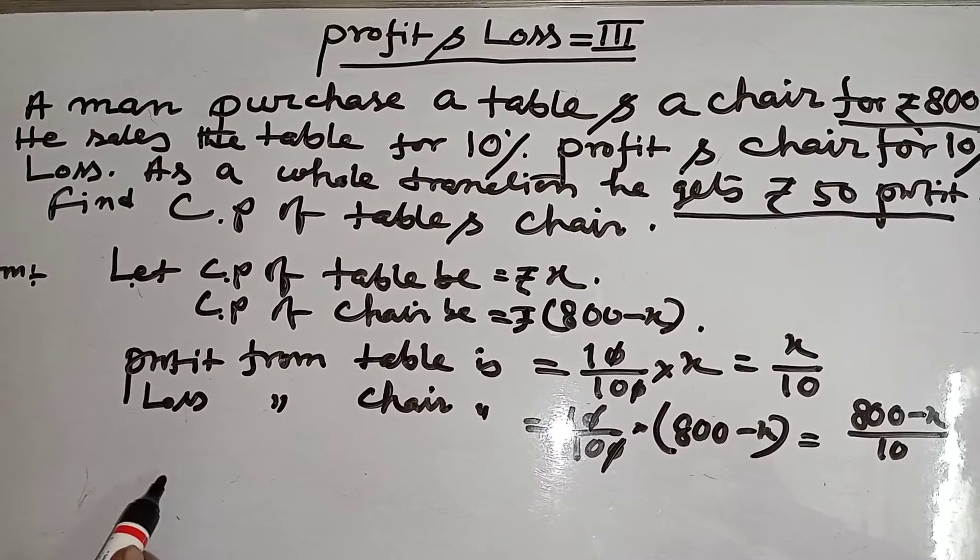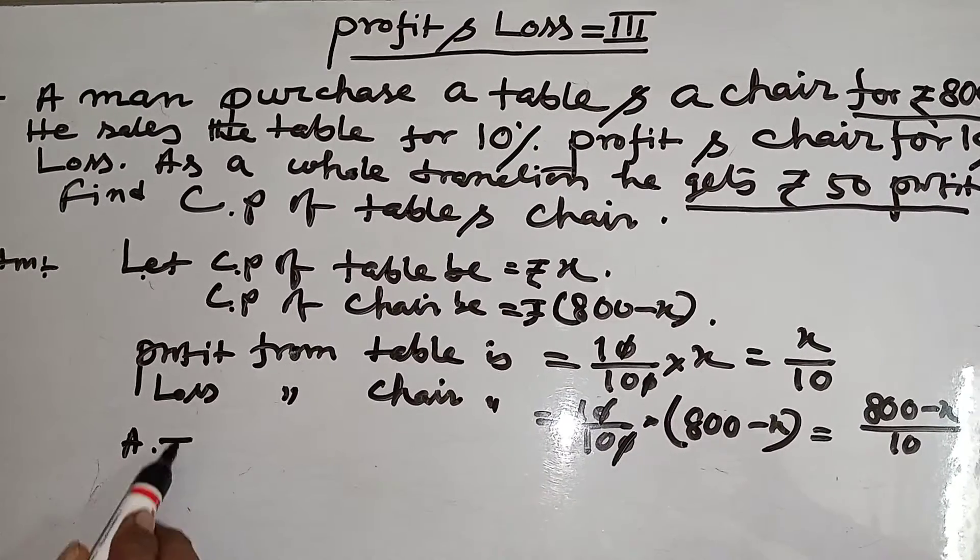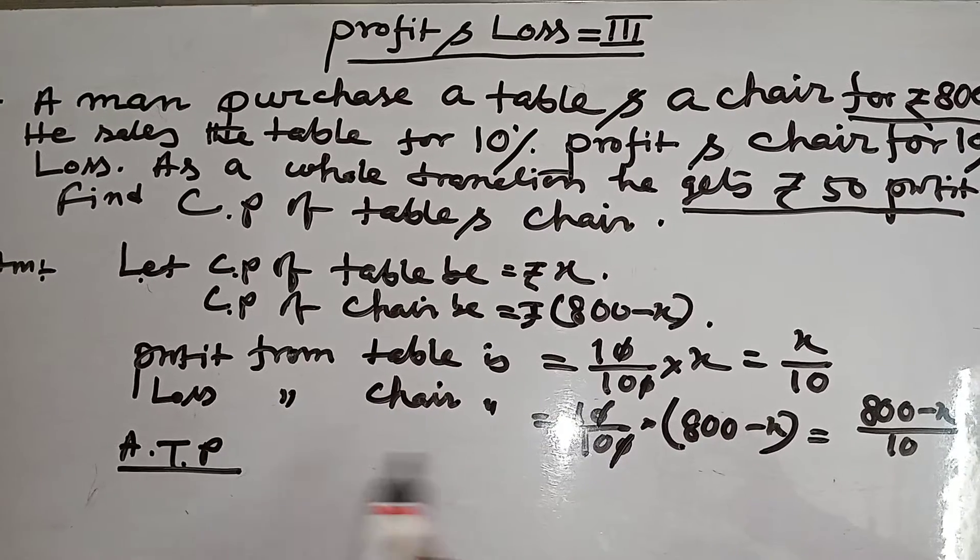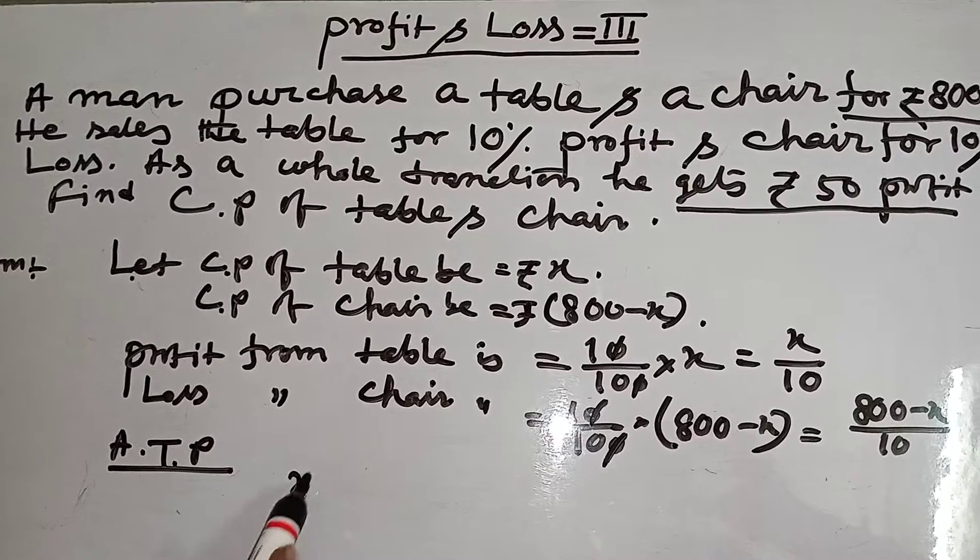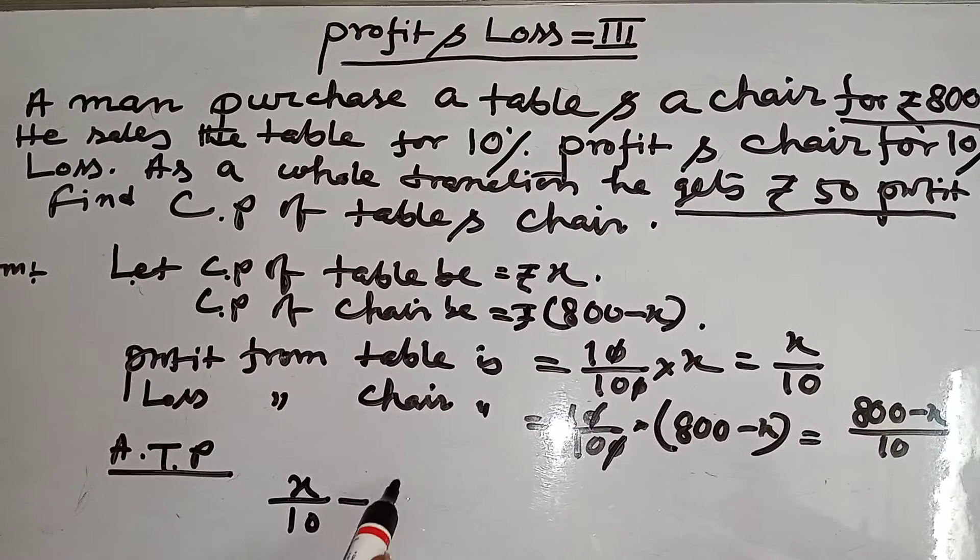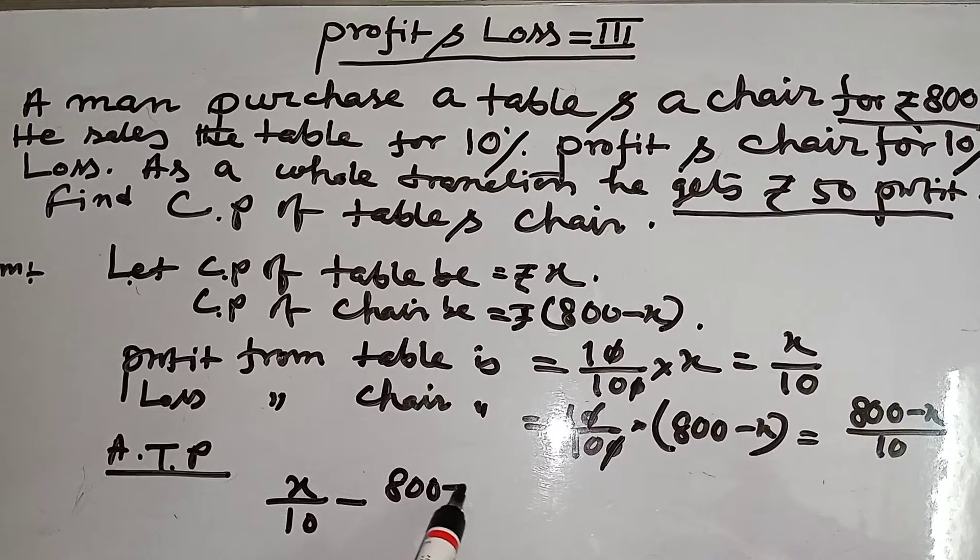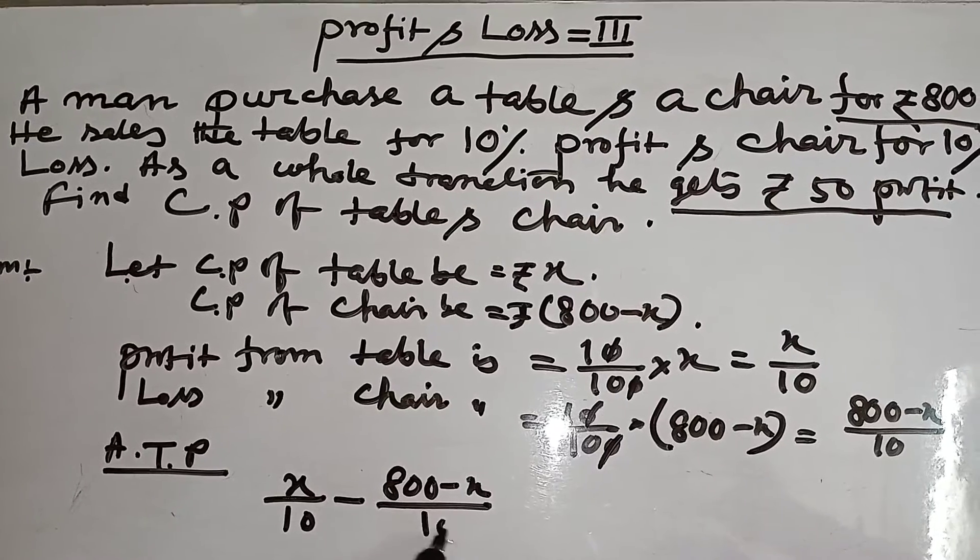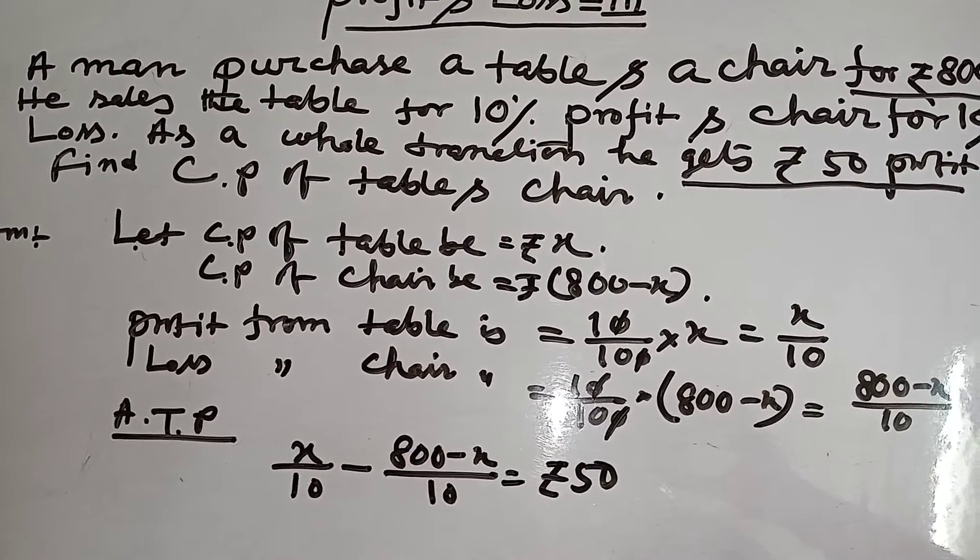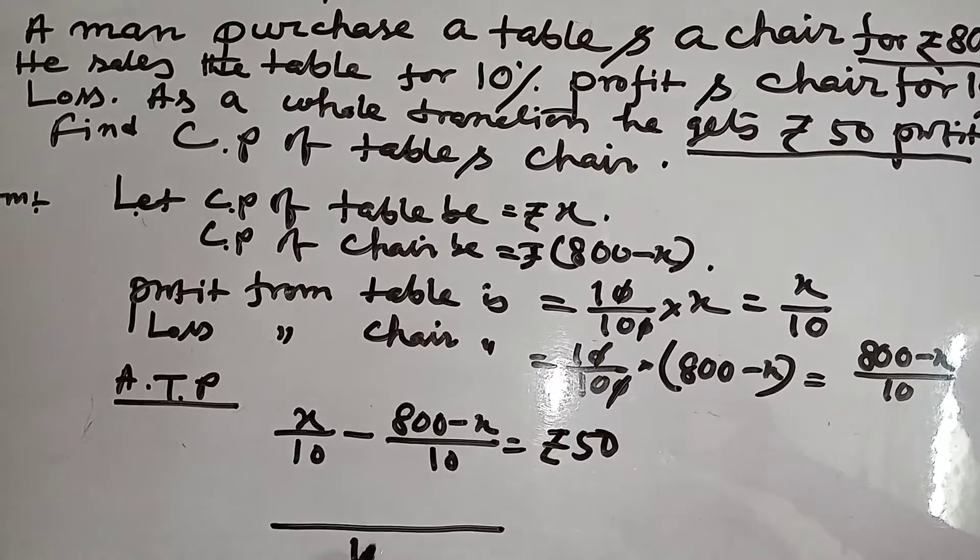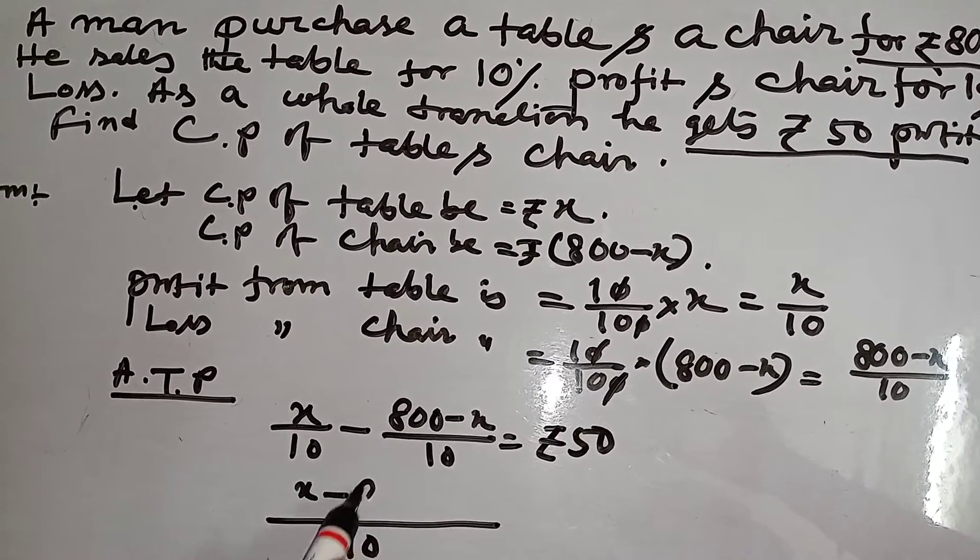According to the problem, profit minus loss equal to total profit. That means X by 10 minus 800 minus X by 10 equal to rupees 50. Simplifying, 2X minus 800.